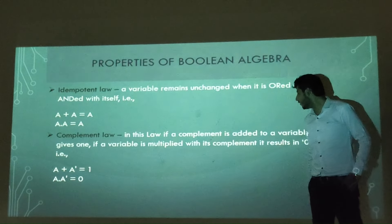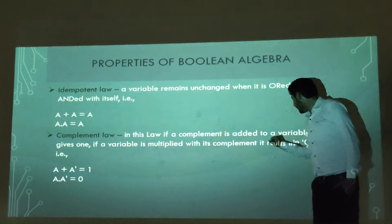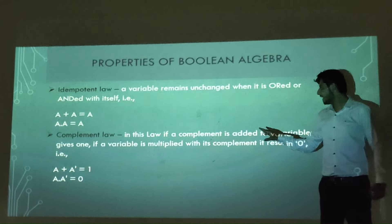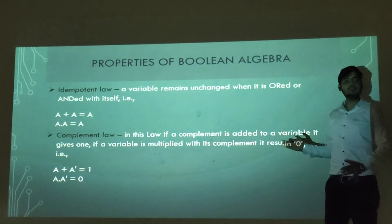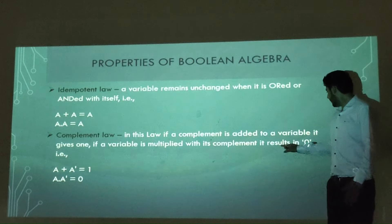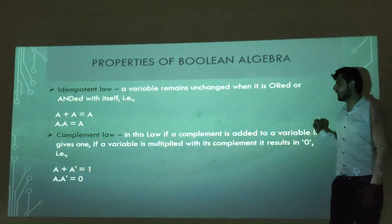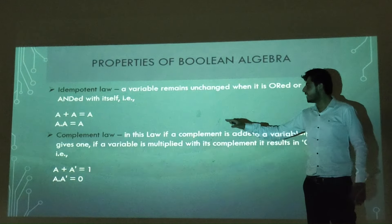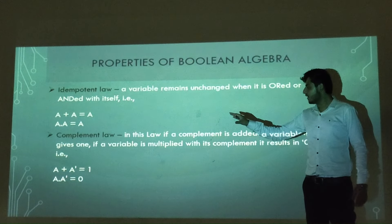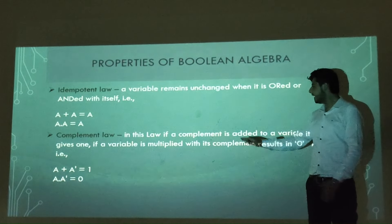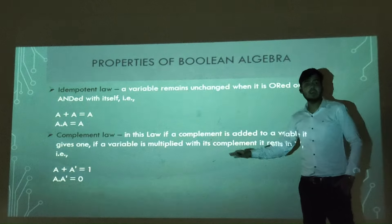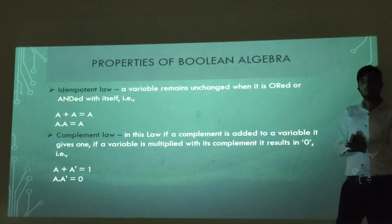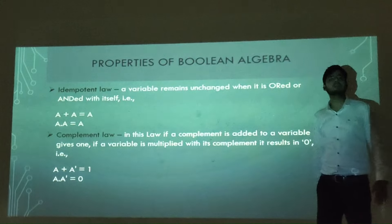The next law is the complement law. In this law, if a complement is added to a variable, it gives 1. If the variable is multiplied with its complement, it results in 0. That means a plus a-complement equals 1, and a dot a-complement equals 0.